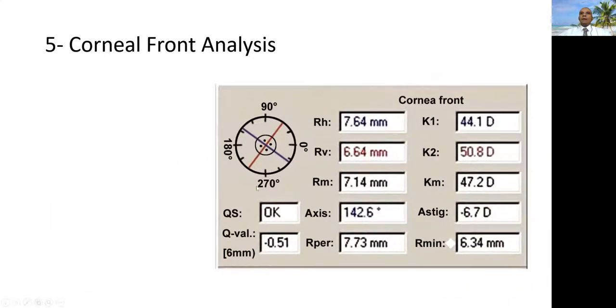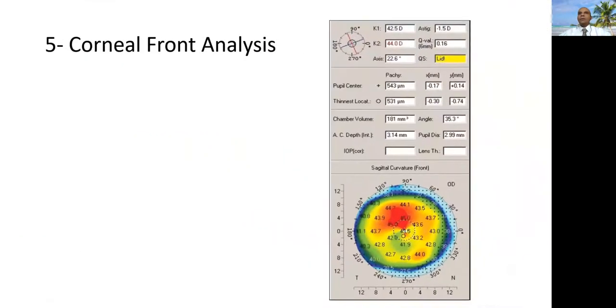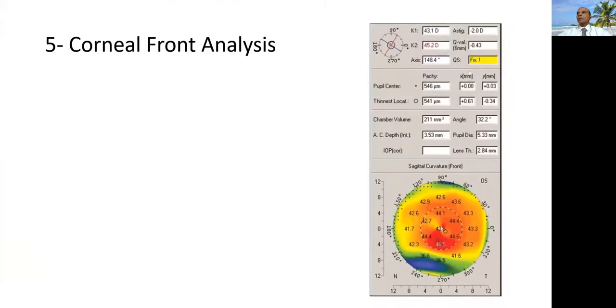Now a table representing corneal front analysis, showing the quality of the capture is okay. And the Q-value, which is asphericity representation of the cornea, should be between 0 and minus 1. This is normal. Now the device quality could mention a lead, could mention a fixation problem. When you see this, or could mention data loss, when you see this box highlighted, you should recapture your images.